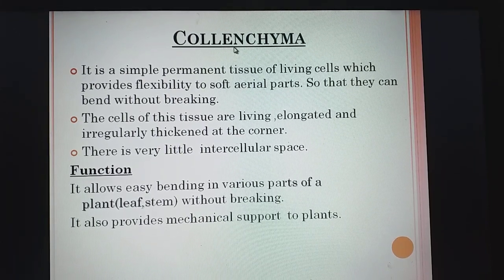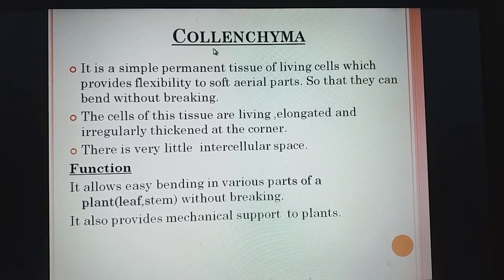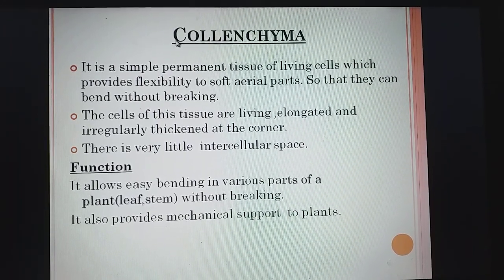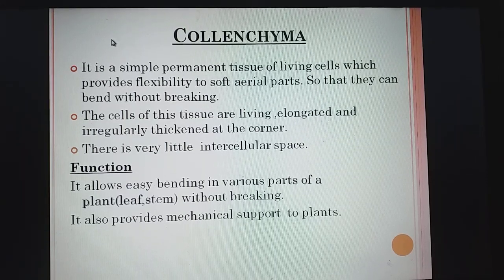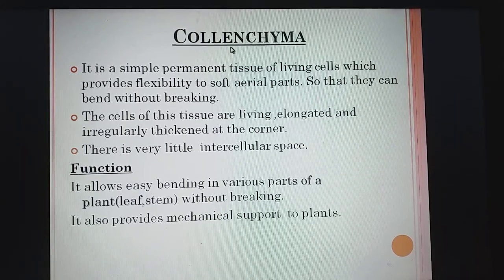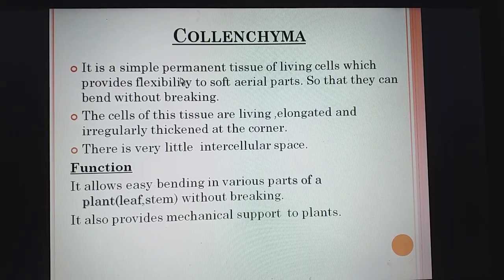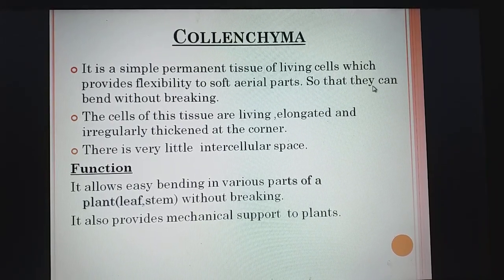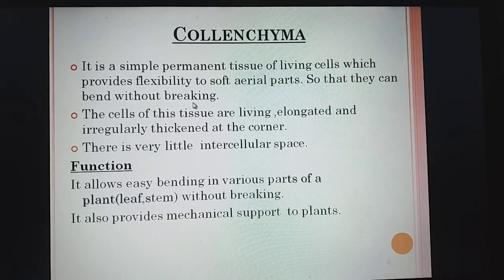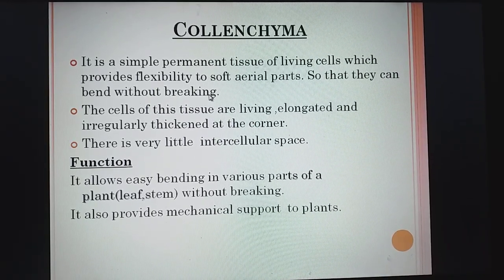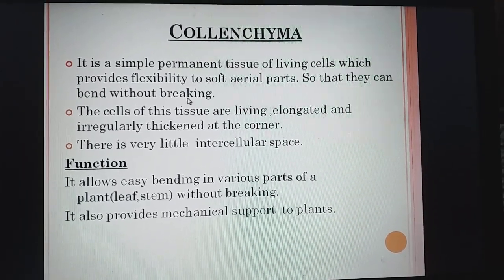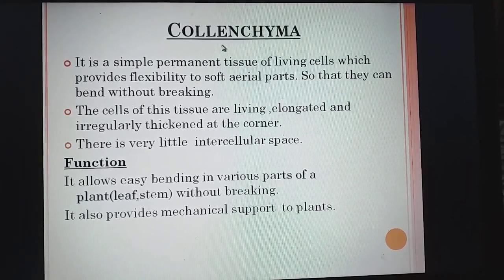Next is colenchyma — don't get confused between chlorenchyma and colenchyma. Chlorenchyma is a type of parenchyma, whereas colenchyma is a simple permanent tissue. It is a simple permanent tissue of living cells which provides flexibility to soft aerial parts so they can bend without breaking. You must have seen when winds blow, small plants get bent and then erect again — they bend without breaking due to colenchyma.